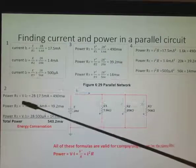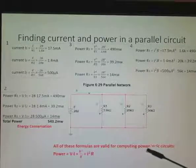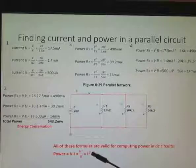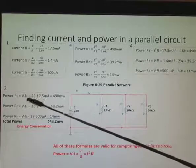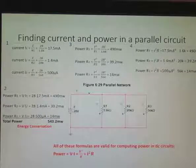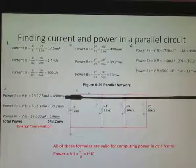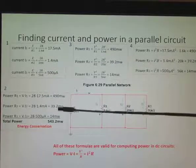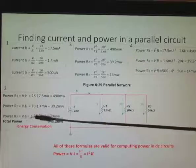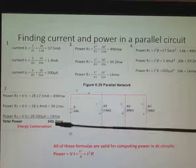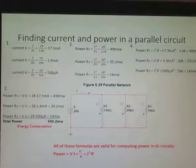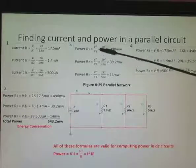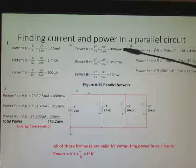The second thing we want to do is find the power. We can use all these formulas for computing power in a DC circuit. Volts times current is a popular one, but also V squared over R, or I squared R. So for resistor R1, I can multiply the volts across it, which is 28 volts, times I1, which we found earlier, and I get 490 milliwatts. And I do the same with R2: 28 volts times 1.4 milliamps, and I get 39.2 milliwatts. And the same for R3, and I get 14 milliwatts. I add them all up. That's my total power, because all the power is used up, and that's energy conservation.